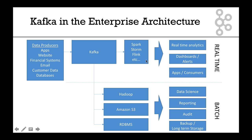For the real-time pipeline, components such as Spark, Storm, or Flink will read the data from Kafka in real-time and perform analytics, dashboarding, alerts, or inform apps and consumers. The possibilities are endless, but it's all real-time.